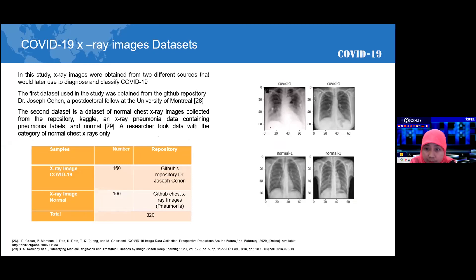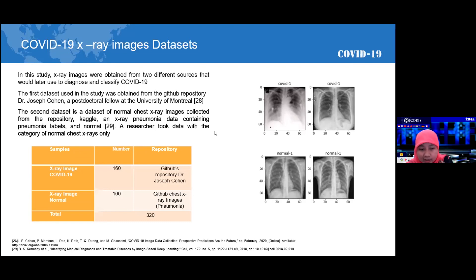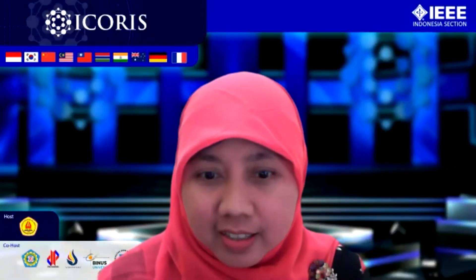Morgan, can you explain what the differences are between the image for normal and COVID-19? Actually, I don't know what the difference is between the images, but I got the dataset with labels, so we just checked the dataset with labels from an open dataset. We don't know what the difference is with the images. That's a challenging area for you to explore further — understanding the visual differences. I think that's enough for Morgan. Thank you for your explanation, and we will move to the next presenter.